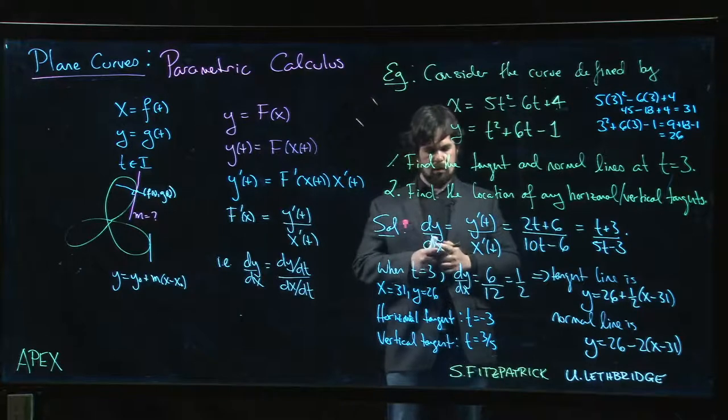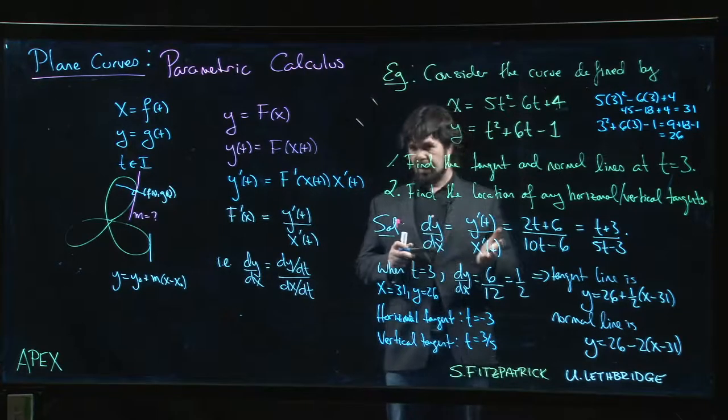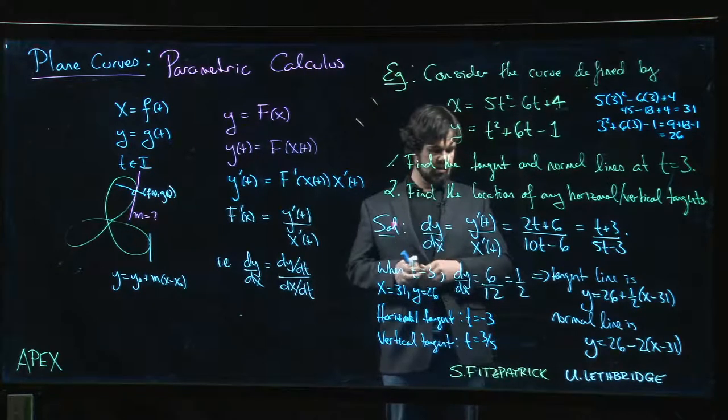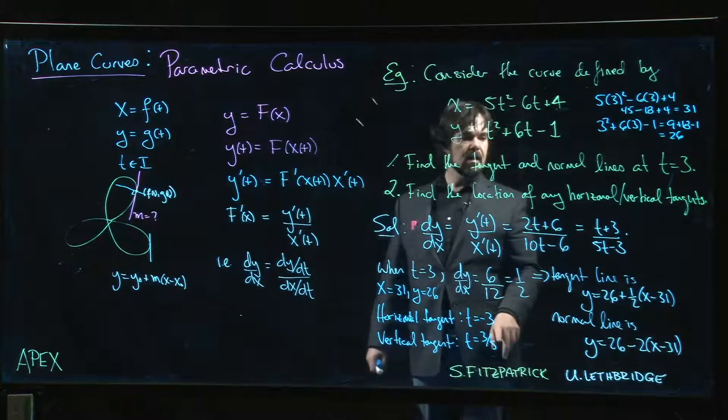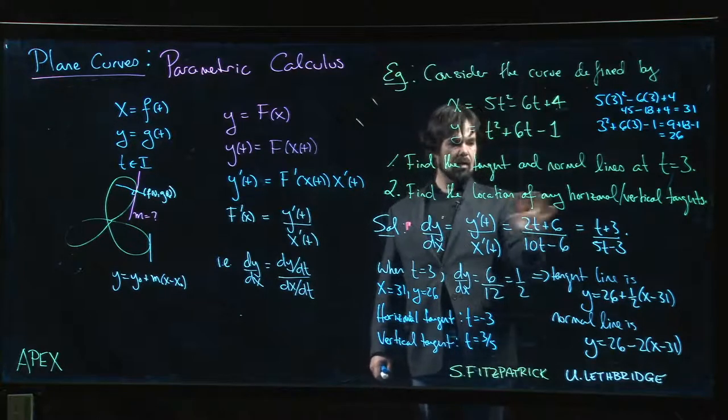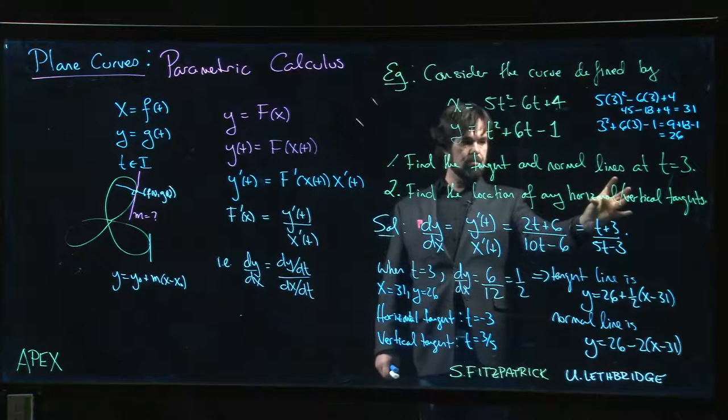Okay, now those are the t values. Technically I should, I mean I'm out of room so I'm going to maybe skip the calculations here, but the next step should be if we actually want the location, where on the curve do those points occur?